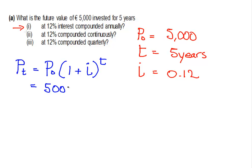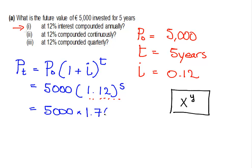That's equal to 5,000 times 1 plus i is 1.12 to the power of 5. So 1.12 to the power of 5. This part here, you would work out on your calculator by using this button here. It's on most calculators, x to the power of y. You should get an answer of 5,000. When you work that out, you should get an answer of 1.762.